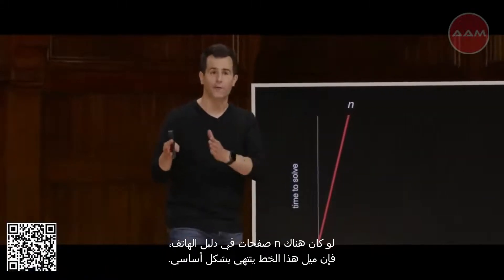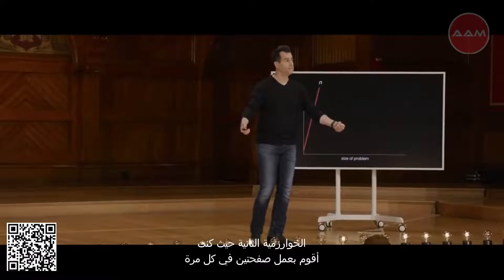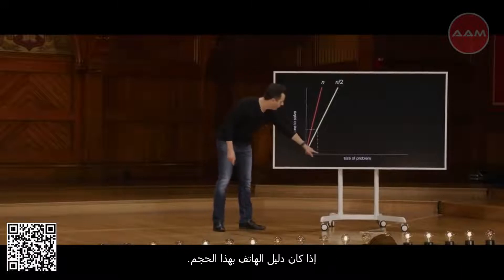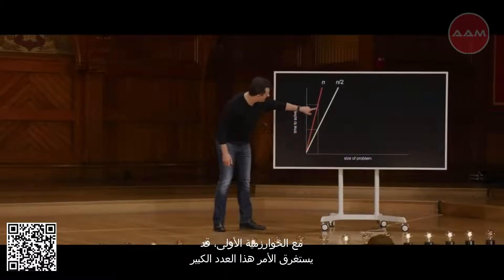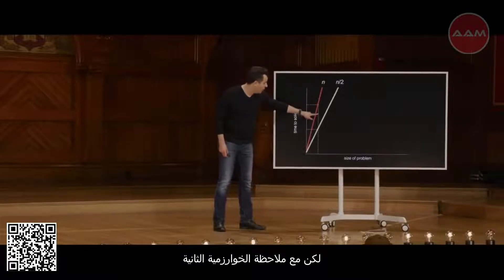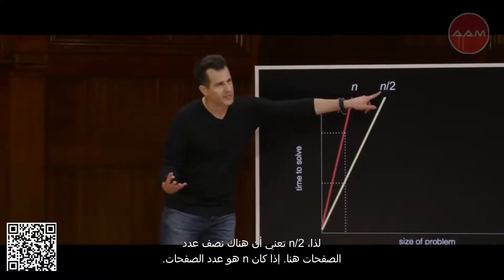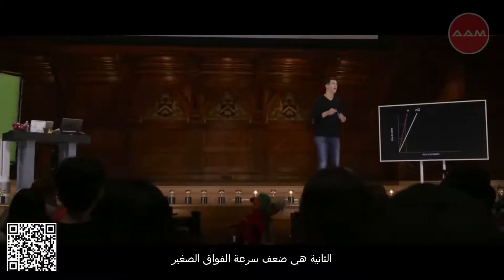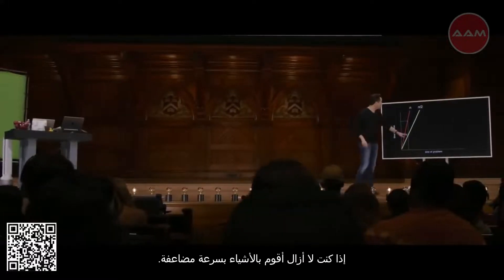If there are n pages in the phone book, the slope of this line is essentially n. The second algorithm, wherein I was doing two pages at a time, was twice as fast, but it's still a straight line. If the phone book is this big, with my first algorithm it might take this many units of time — this many page turns. But with that second algorithm, the intersection is with a much lower point on the yellow line than on the red. So n over 2 means there's half as many pages. Indeed that second algorithm is twice as fast, minus the little hiccup of doubling back one page.